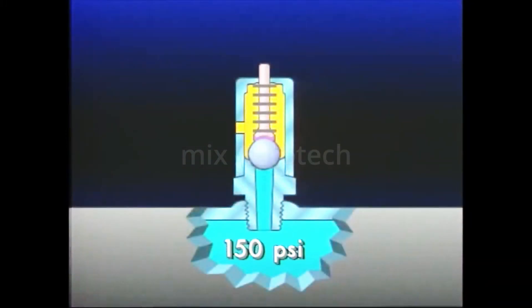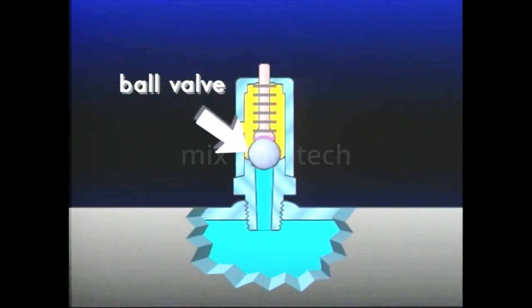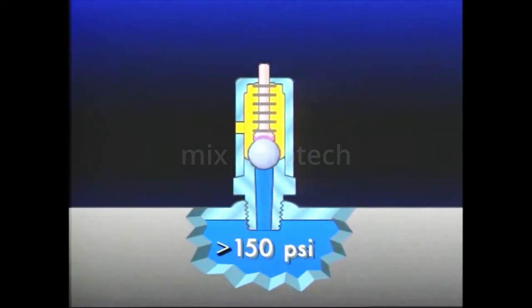Generally set to open at 150 psi, the safety valve employs a spring-loaded stem resting on a seated ball valve. When reservoir pressure exceeds the valve setting of 150 psi, the ball moves off its seat and air is exhausted through the exhaust port.